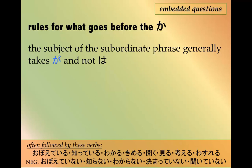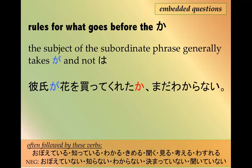If there's a subject in the subordinate phrase — and the embedded question is a subordinate phrase to the main sentence — it generally takes が and not は. For example: 彼氏が花を買ってくれたかまだわからない — 'I don't know whether or not my boyfriend bought me flowers.' The buying of flowers is done by 彼氏, so you use が for the subordinate clause. If there were a は, it would be わたしは.